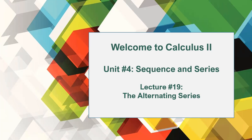In the second part of lecture 19 we are going to talk about, based on the alternating series, what is absolute convergence and what is conditional convergence. Now let's go ahead and go to our lecture notes.